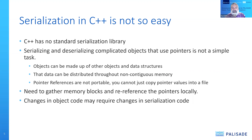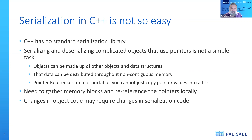Changes in your object code require changes in the code that serializes and deserializes them. Originally, Palisade had serialization and deserialization that was basically constructed manually, and it was a terror to maintain — any time we made a change in one of our objects, we'd have to figure out where to make the change in the serialization. It's a maintenance nightmare.